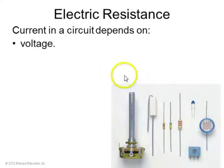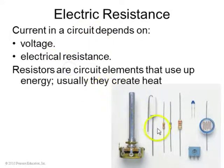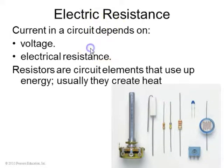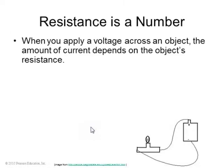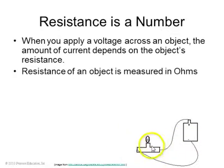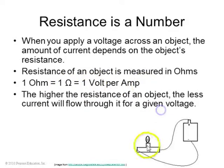Resistance: current in a circuit depends on voltage and resistance. A resistor is a circuit element — these are all resistors that use up energy somehow, either making light, sound, or just creating heat. In a circuit diagram, you draw a resistor as a squiggly line. Resistance is also a number. When you apply a voltage across a light bulb, the amount of current that flows through it depends on the resistance, measured in ohms. The symbol for ohm is omega, the capital Greek letter omega, and 1 ohm is 1 volt per amp.